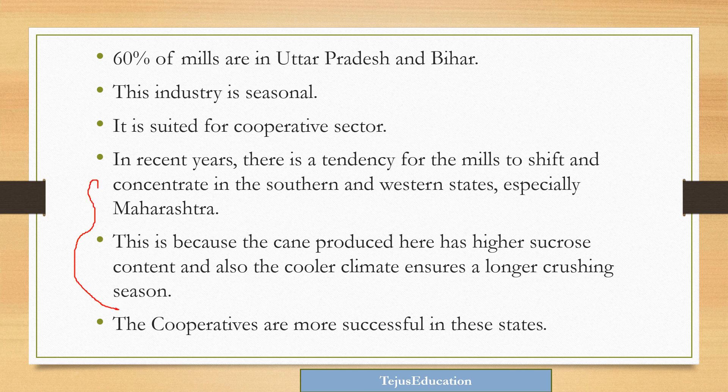This shift is because the cane produced in southern and western states has higher sucrose content, and the cooler climate ensures a longer crushing season. Crushing is done to get sugarcane juice, from which sugar is produced.